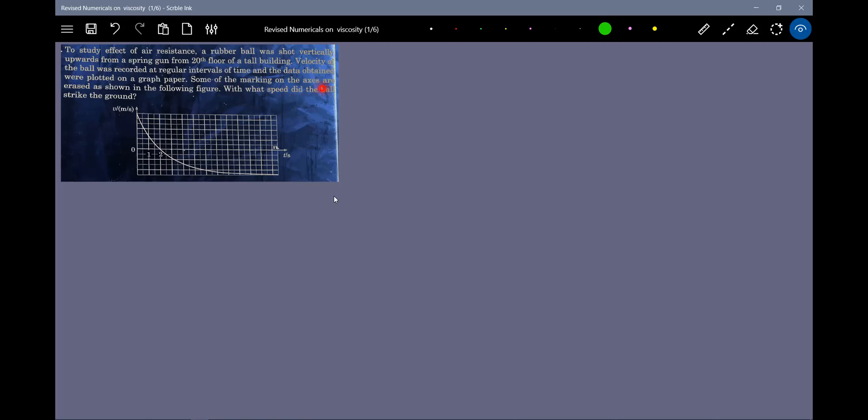Looking at the markings on the axes in the following figure, with what speed did the ball strike the ground? You can see that here on the y-axis there are no markings, and here also this is showing 12 seconds. One axis is missing.